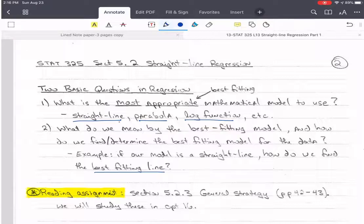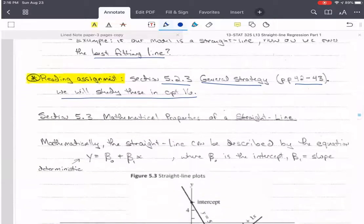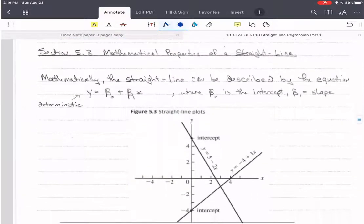Alright, the reading assignment. It's section 5.2.3, it's called The General Strategy, and it's about a page and a half in your book. Starts near the bottom of page 42 and goes all the way through the bottom of 43. And the reason I'm not going over this in this video is that I want you to read it, and we're going to cover the whole thing in chapter 16.